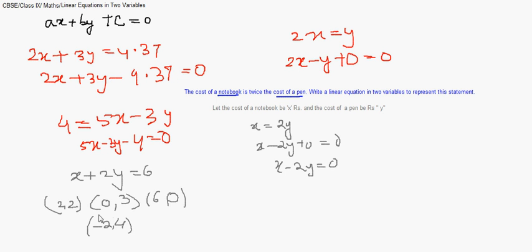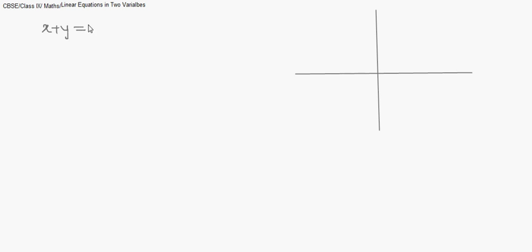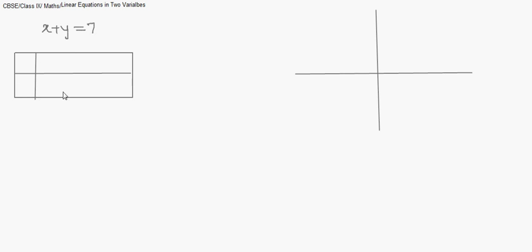Now the question is how this can be achieved by the graphical method. We move on to the graphical representation of the solution of a linear equation in two variables. We will make a Cartesian plane — just a rough figure — and suppose the question says draw the graph of x plus y equals 7. We make a table to plot coordinates.